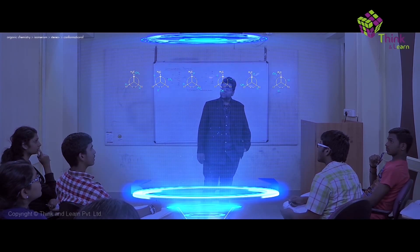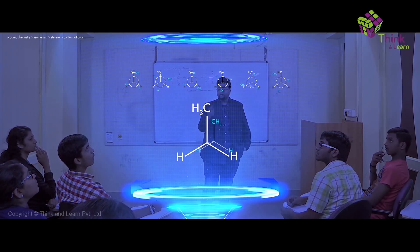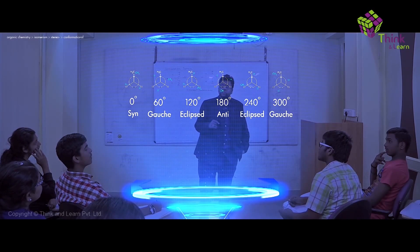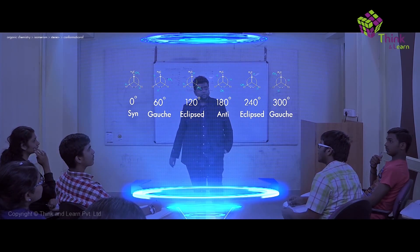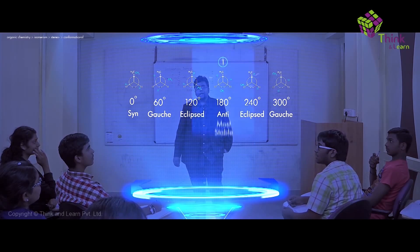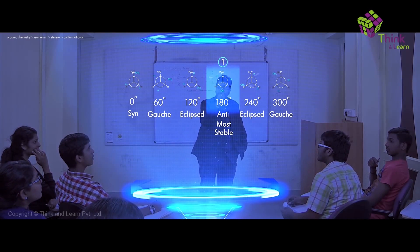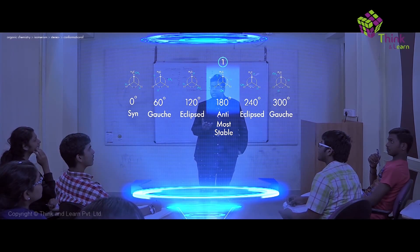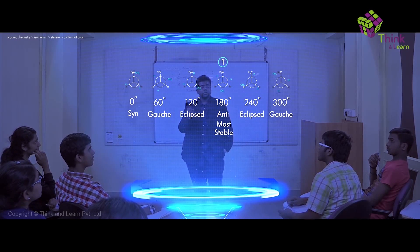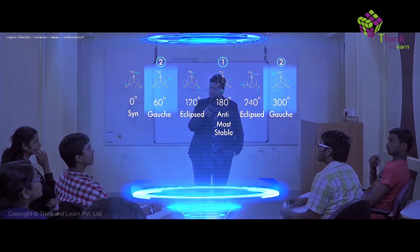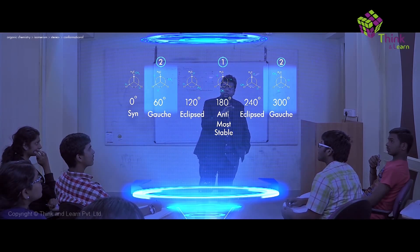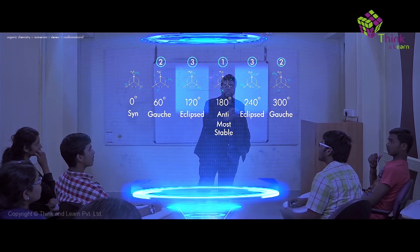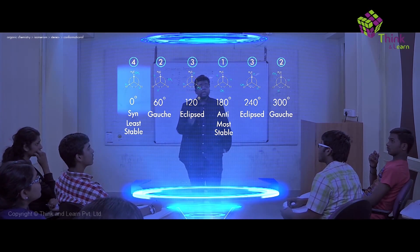That is the sawhorse projection for butane. Now, out of all these conformations, the most stable is the anti conformation, because the angle there is 180 degrees and CH3 is completely opposite to the other CH3. After anti, the gauche conformation is the next most stable, followed by the partially eclipsed conformation (CH3 eclipsing H), and finally the least stable is the syn conformation.